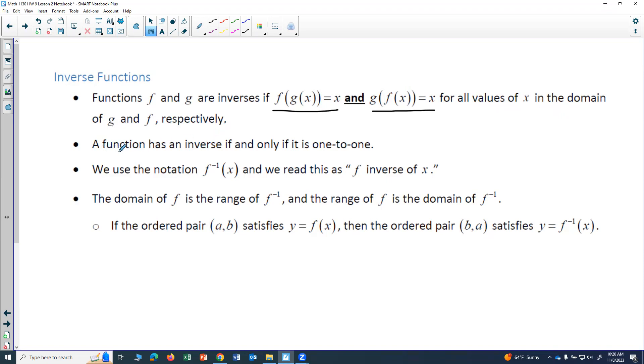A function has an inverse if and only if it is one-to-one. So if your function is one-to-one, you're guaranteed that there is an inverse.